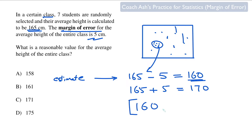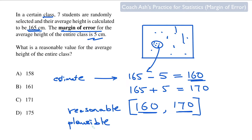So you write this as 160 to 170. Any number inside this range, including 160 and 170, is said to be a reasonable value. Another SAT word is it's said to be a plausible value. So around 165, you're just subtracting and adding five. Now they're asking: what is a reasonable value for the average height of the entire class?